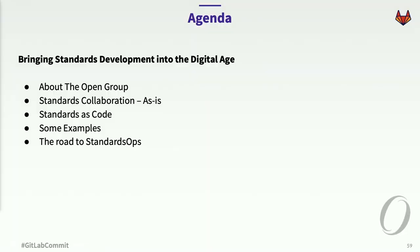I'm going to talk a little bit about the Open Group, because some of you may have heard of us and some may not. I want to talk about how we typically, in many standards bodies, do standards collaboration currently. Then I want to get into this concept of standards as code, following on what you've heard here — everything is code. And I'll give some examples of specific use cases of GitLab, and then talk about where we want to go beyond simple collaboration by our community.